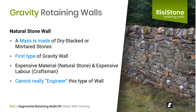An example of another type of gravity wall would be a natural stone wall, where the mass is constructed from dry stacked or mortared natural stone. This is really the first version of the segmental retaining wall. Typically, this type of wall is very expensive, as it uses natural stone and requires skilled craftsmen to properly install it. There is also no proper way to engineer this type of wall, as the properties of natural stone pieces are not known or are extremely variable.